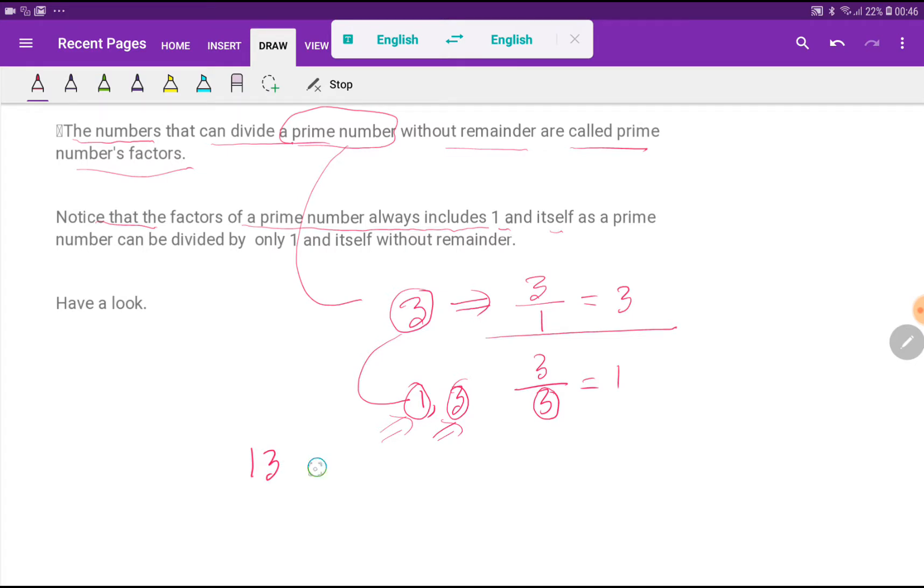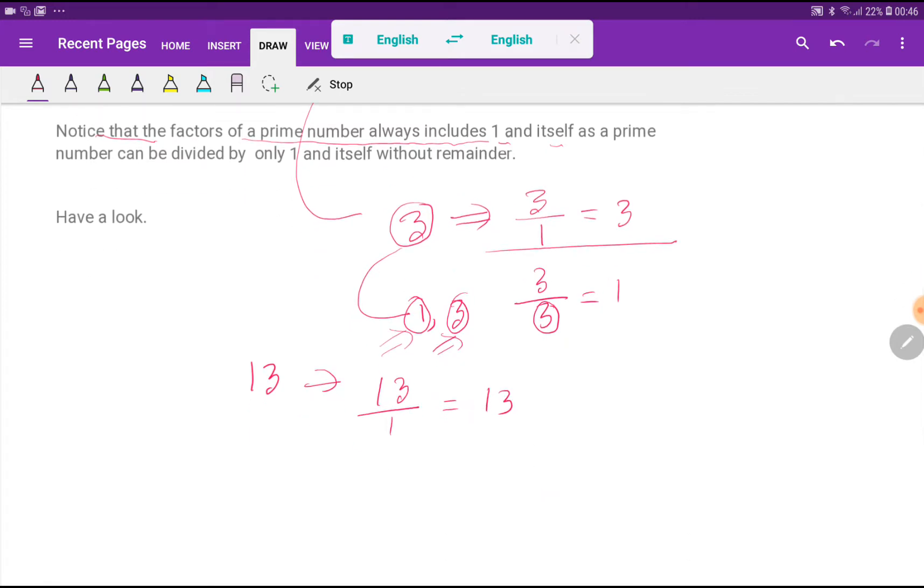13 is a prime number because it has two factors: the first divisor is 1, and the second is 13 itself.